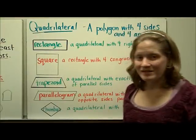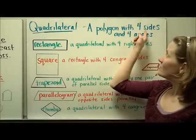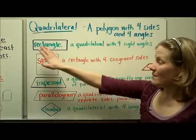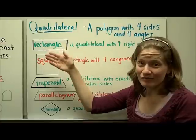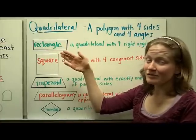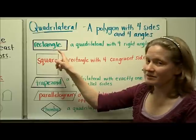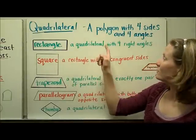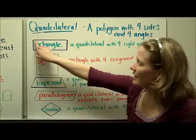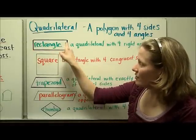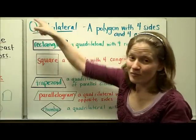Let's look at specific names of quadrilaterals. A quadrilateral is a polygon with four sides and four angles. A rectangle — we've been identifying rectangles since kindergarten — but to be a rectangle, it has to be a quadrilateral with four right angles. The right angles are 90 degrees, the same shape as a corner of a piece of paper.